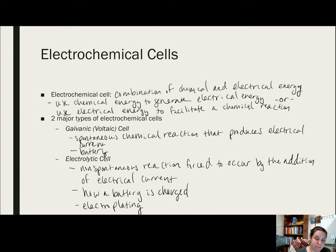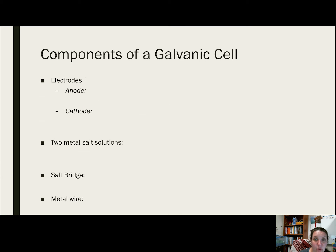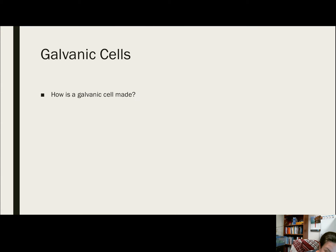We are going to focus mostly on galvanic cells. A galvanic cell has many different parts: electrodes, a salt solution or two salt solutions, a salt bridge, and a metal wire. Our two electrodes are an anode and a cathode, and the electrodes must be made out of a metal or graphite — so they must be conductive. Generally this is going to be a metal, but graphite also works.